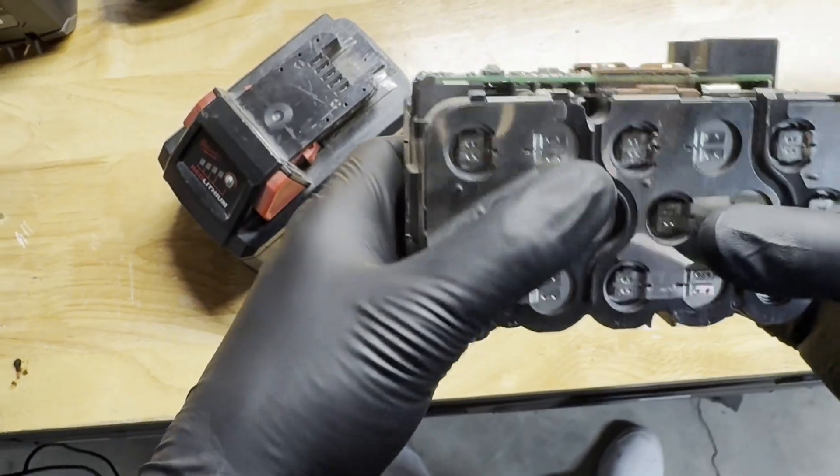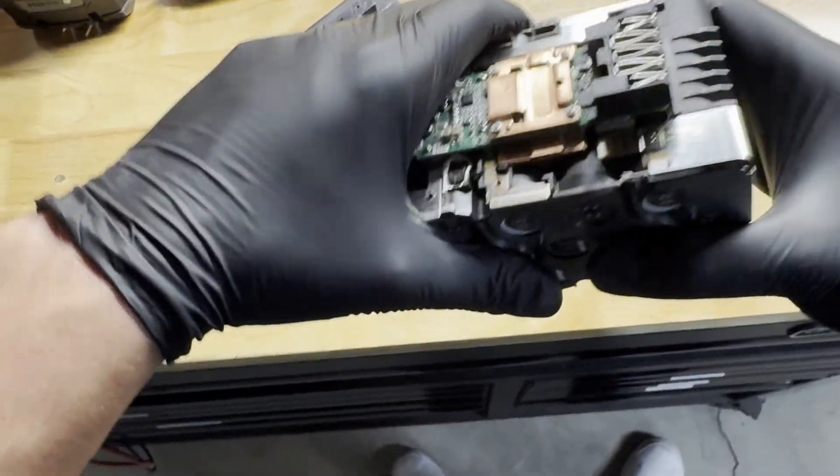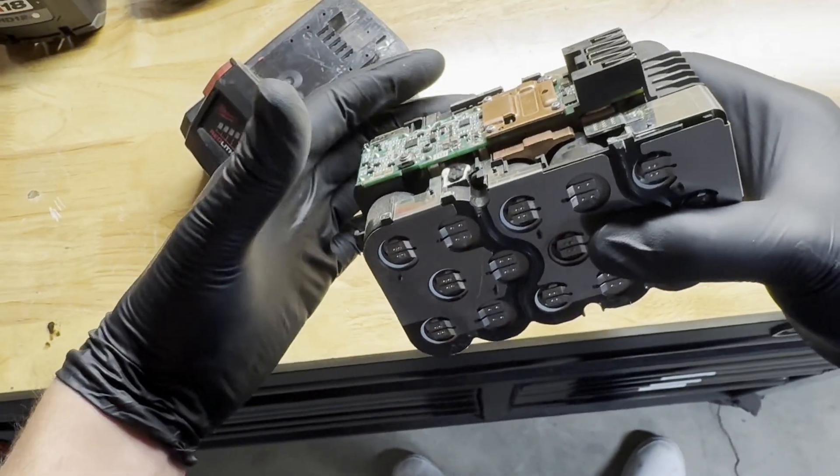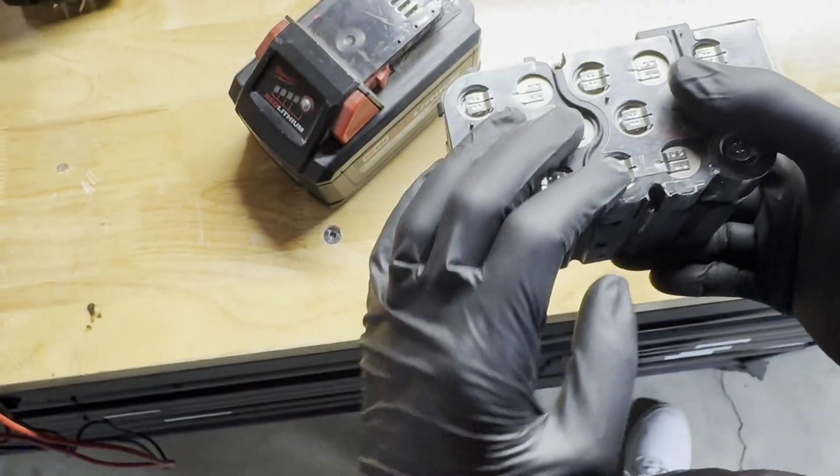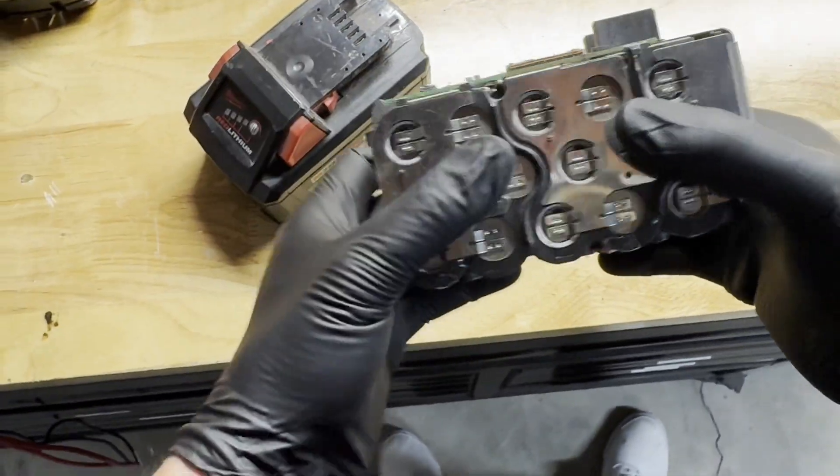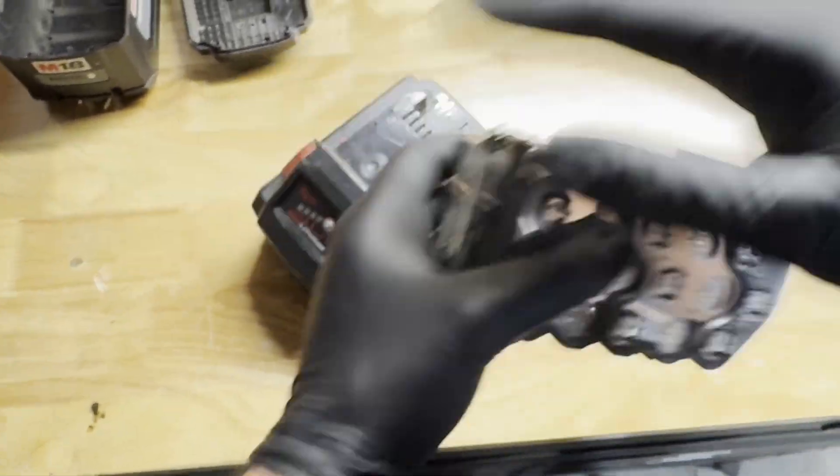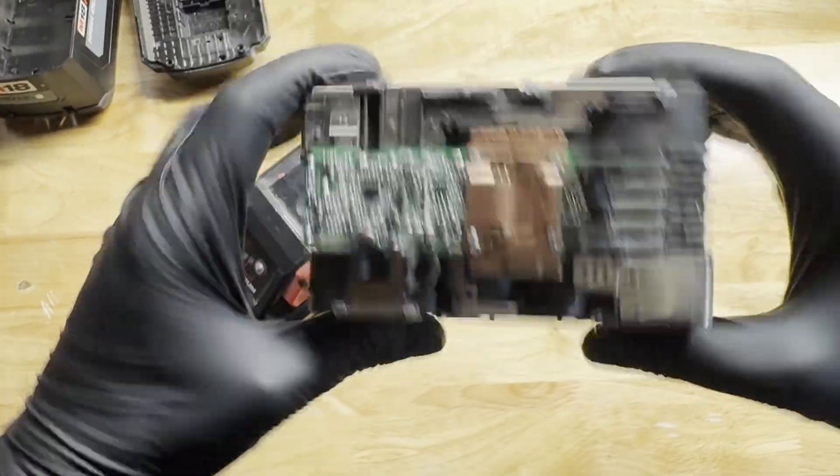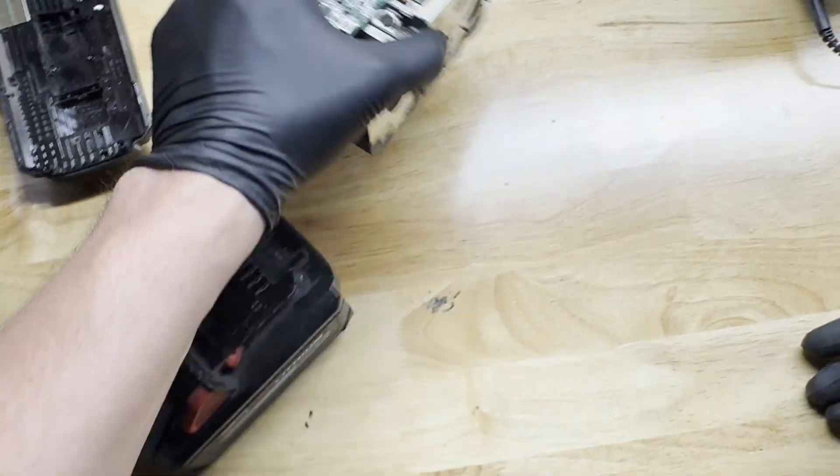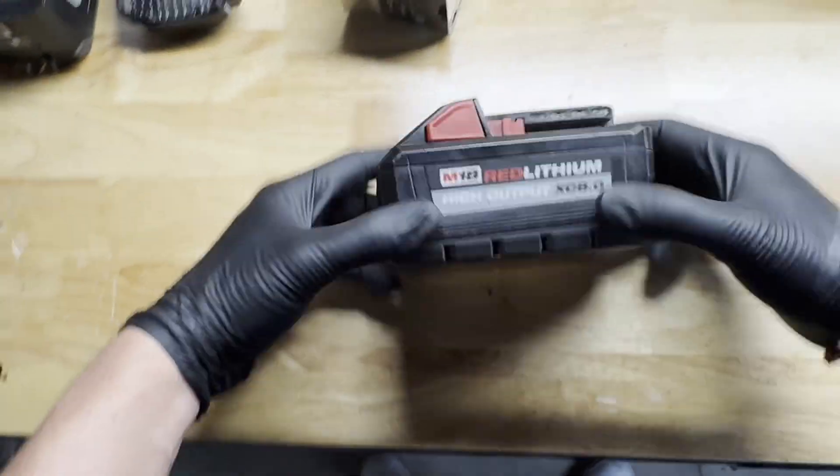And milliamp hours is essentially, you have a tool that runs using one amp, and this says 4,000 milliamps. It'll essentially run for four hours if that tool uses one amp an hour. So that's essentially all that really means. So, let's get into this one.